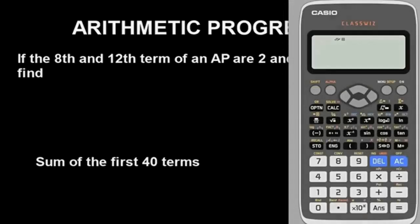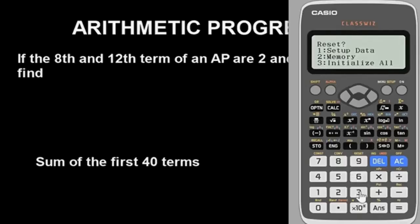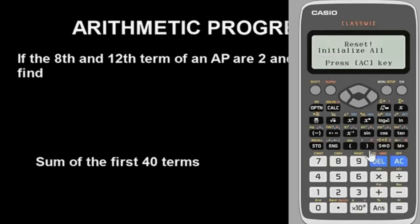This is the Casio fx-570ES Plus calculator. The first thing you have to do is clear the calculator — very important. Put your calculator in default. To do it, press Shift, then button 9. For the instruction to clear or initialize all, press 3, then Yes. Initialize all and press the AC key.